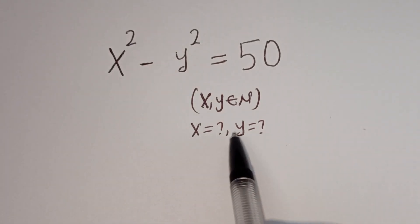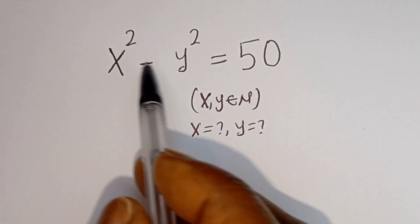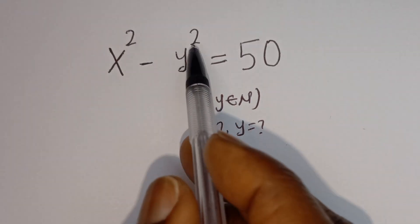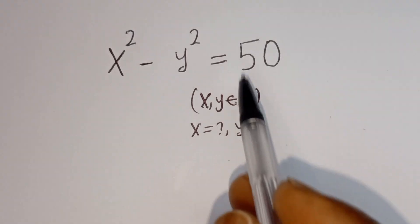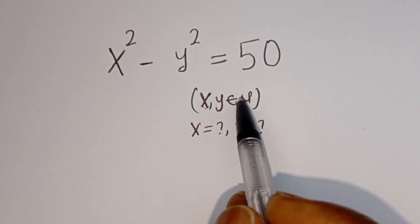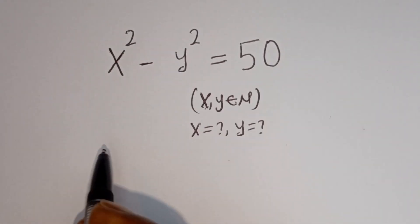Hello. How to solve for x and y in this equation: x squared minus y squared is equal to 50, where x and y are members of the natural numbers.